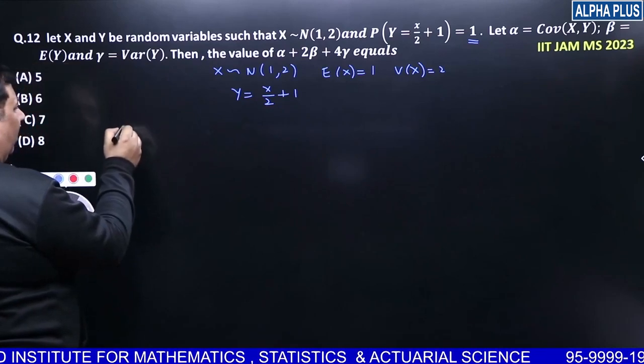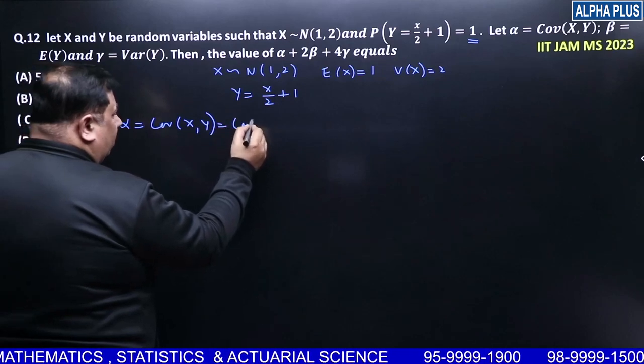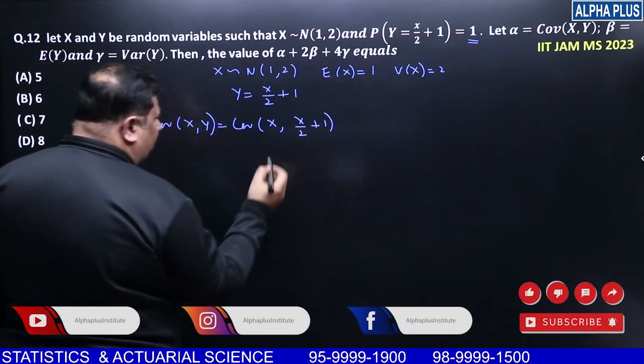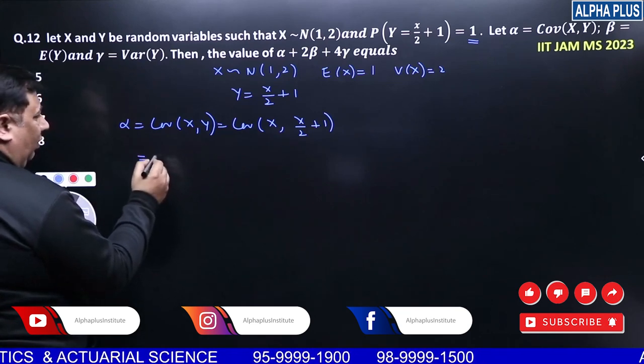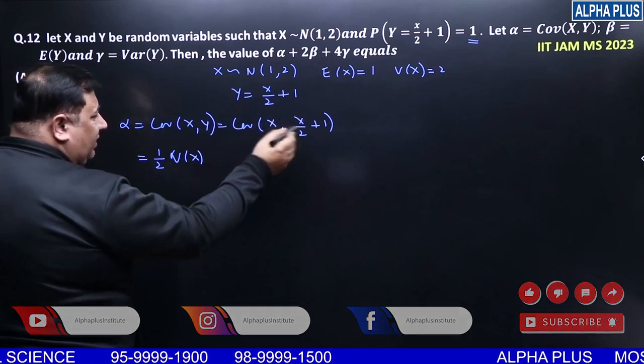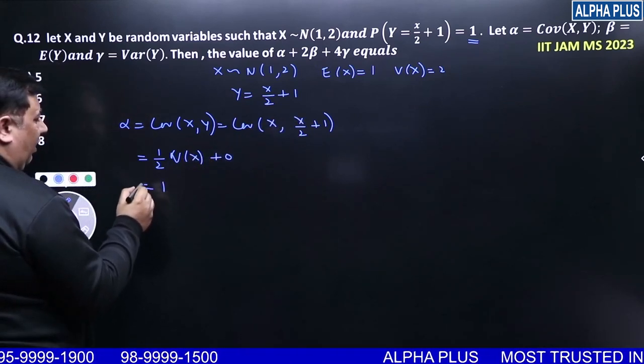Alpha, what is it equal to? Covariance of X, Y. X by 2 plus 1. So, 1 by 2, variance of X. Because covariance of X, X is variance of X and this is 0. And variance of X is 2, which is 1. Alpha is 1.